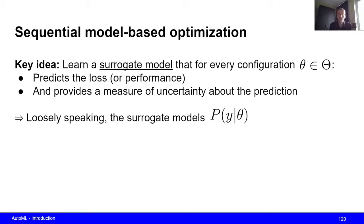So loosely speaking, we are trying to model the probability of observing a given performance y, given our hyperparameter theta. So this is what we want to do in sequential model-based optimization.